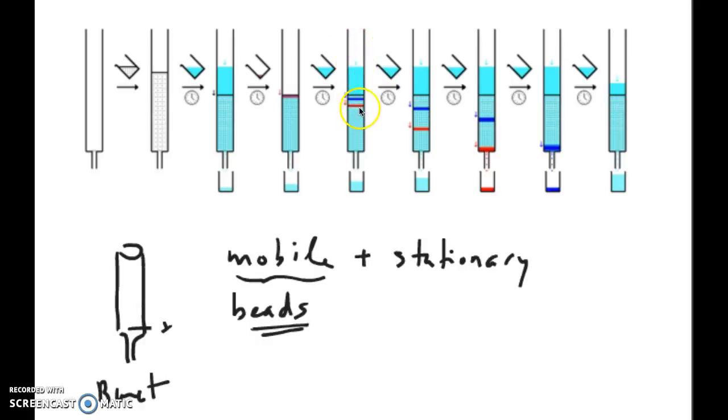As the solvent moves down, the different components of that sample are going to be separated, again, based on their attraction to the mobile phase, which is the solvent, and the stationary phase, which is your beads. In this particular sample, you have two different components, red and blue. The red is going to be more attracted to the solvent, so it's going to come out first.